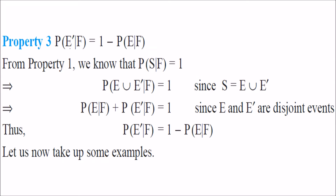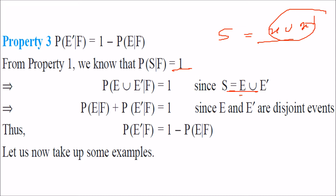Property 3: P(E'|F) = 1 − P(E|F). We know from Property 1 that P(S|F) = 1. Since S = E ∪ E', we can write P(E∪E'|F) = P(E|F) + P(E'|F) = 1. Taking P(E|F) to the right-hand side gives P(E'|F) = 1 − P(E|F).